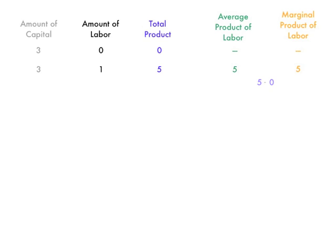I'll talk about that in the next example. Again, amount of capital is 3. Labor is 2. Total product is 18. Average product is 18 divided by 2 which is 9. Marginal product of labor is 18 minus 5 divided by 2.